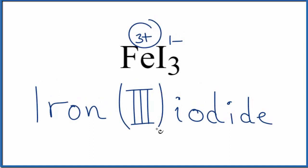The name for FeI3 is iron(III) iodide. If you are given the name iron(III) iodide and asked to write the formula, you know the iron is three plus because of this Roman numeral. And since iodine is always one minus, you'll need three of them to balance that out, giving you FeI3.